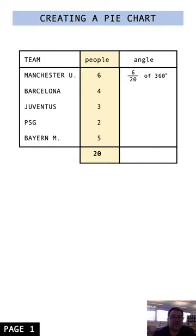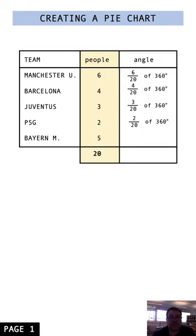The first one has to be 6/20ths of the pie chart because it's 6 people out of 20. So 6/20ths of 360 degrees. The next one is 4/20ths, then 3/20ths, then 2/20ths, and the last one is 5/20ths.